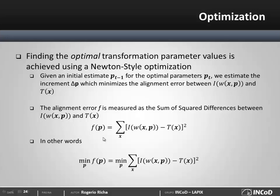The sum of square differences is a function only of the transformation parameters p. So if we vary these parameters p, the transformation parameters, the back-warped image will change and consequently the SSD score will change. Mathematically, the problem is finding the parameter vector p which minimizes f.